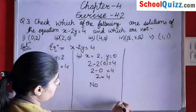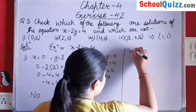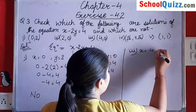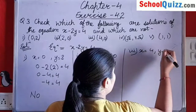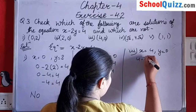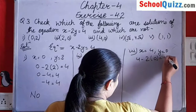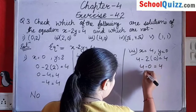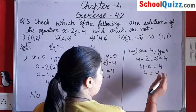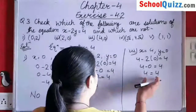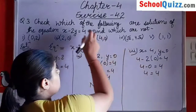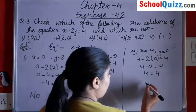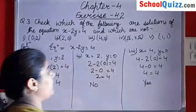Now checking for our third point. In the third part, x given is 4 and y equals to 0. Putting x equals to 4 and y equals to 0, we get 4 minus 0 equals to 4, that is 4 equals to 4. These are equal. That means (4, 0) is a solution of the equation x minus 2y equals to 4. Its answer is yes.